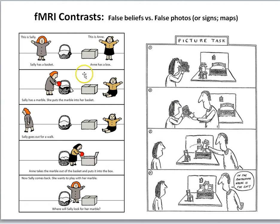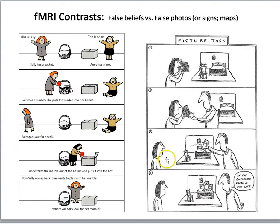The control task often used is called the picture task. It has similar features to the false belief task: we see a person taking a photograph of a scene — the cat is on the chair. The picture captures this scene like a Polaroid, but then the cat is moved from the chair to the bed. We ask: in the photograph, where's the cat? The photograph no longer represents current reality — it's a false photograph. Something changed in the world and the picture no longer represents it. This has a similar structure to the false belief task — something changed in the world — but here we're interested in the beliefs of Sally versus the state of the picture.